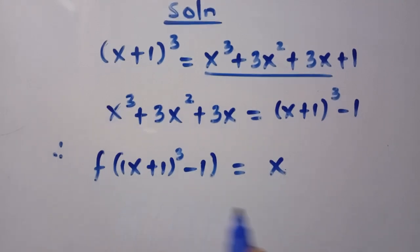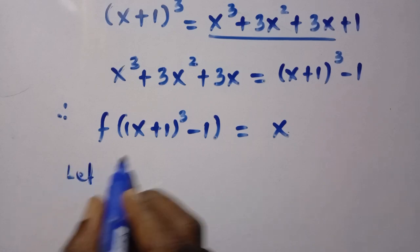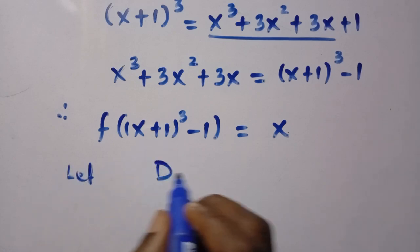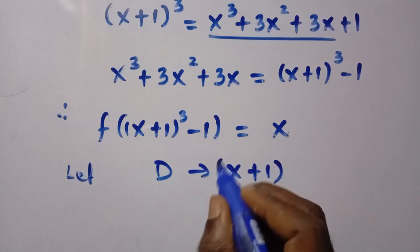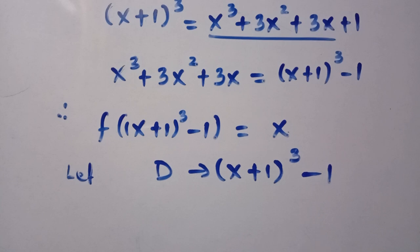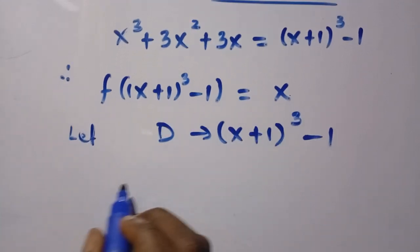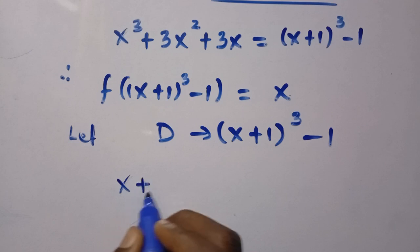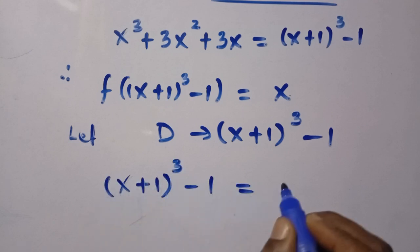We will form a substitution and apply the substitution method. Suppose we let this domain — which is (x+1)³ - 1 — equal t. Our domain here is (x+1)³ - 1, and we let (x+1)³ - 1 = t.